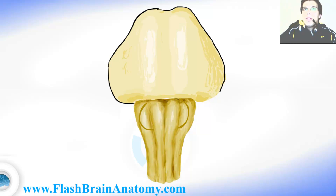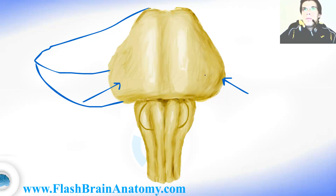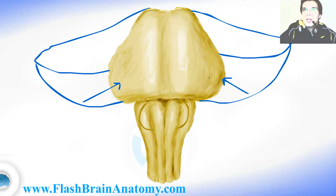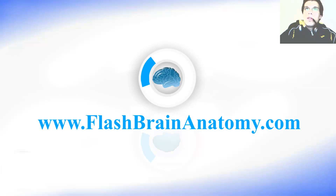On the basal side of the pons there is not much to see. These structures here are the peduncles that connect the pons to the cerebellum. The cerebellum is supposed to be behind here, but I did not illustrate it in this image. This here is the basilar sulcus — it is called that because the basilar artery runs here, named for being on the basal side of the pons.